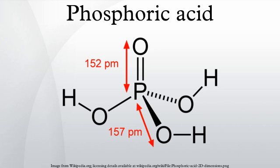The oxidation state of all the oxygen atoms is −2 and all the hydrogen atoms is +1. Triprotic means that an orthophosphoric acid molecule can dissociate up to 3 times, giving up an H⁺ each time,